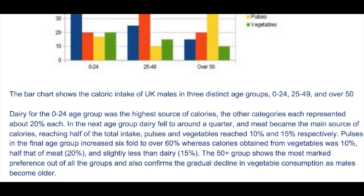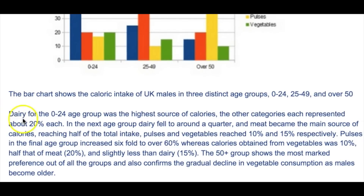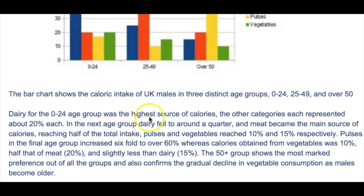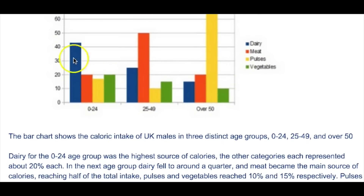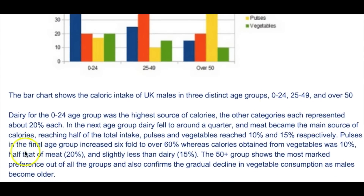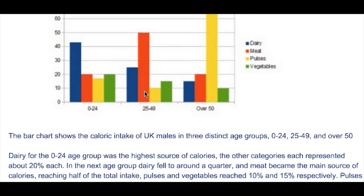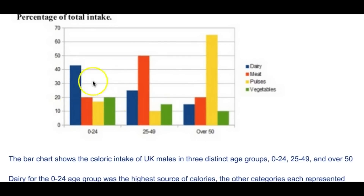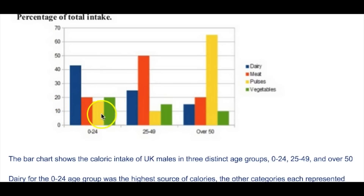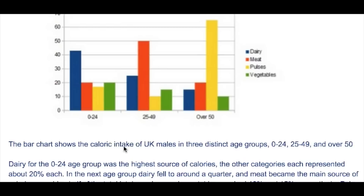Immediately I go for clarity, starting with the subject: 'Dairy, for the 0 to 24 age group, is the highest source of calories.' We've got the superlative there, and we're going subject, verb, object. Dairy — straight in. Superlative done. 'The other categories each represented about 20% each.' You can see I wanted to group the data — this is a perfect group, roughly similar, and I can just bunch it together. What the usual tendency is to list it, which is horrible: 'Meat represented 20%, pulses represented 18%, vegetables represented 20%' — that's just boring.